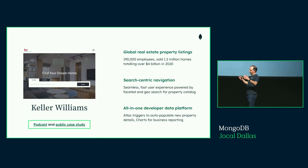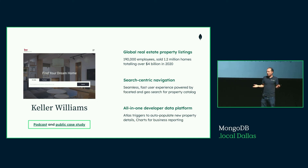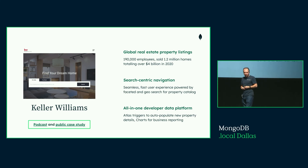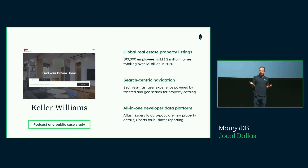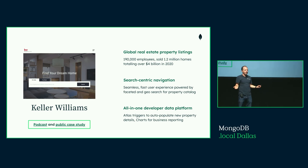Are customers really using this? Yes. Keller Williams, a global real estate company, put search at the center of their application — when you search for a house, you literally search for it. Their data is in MongoDB, and they were able to use Atlas Search just by configuring a search index to make that data available to end users. They also use Atlas Triggers to enrich the data further, and they use Charts for business reporting — all without going to separate products, handling it with automated synchronization.